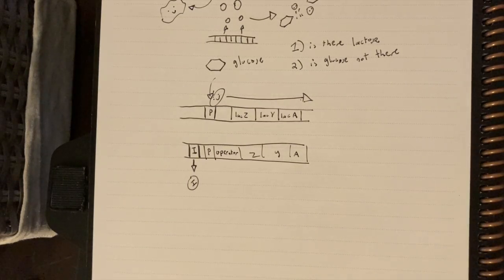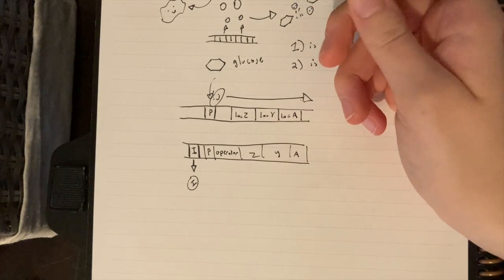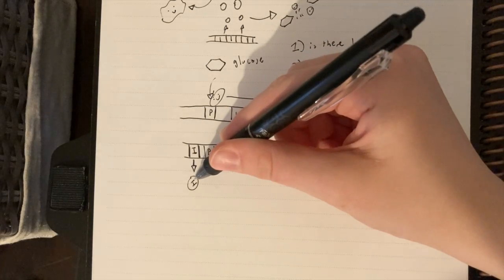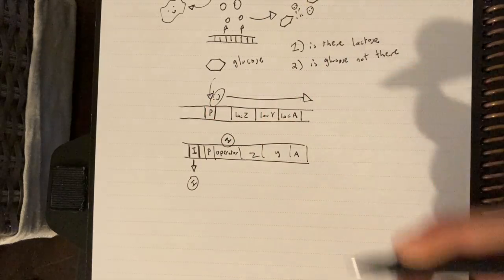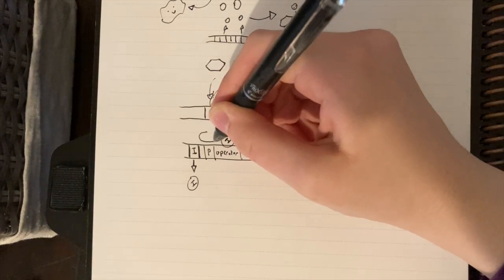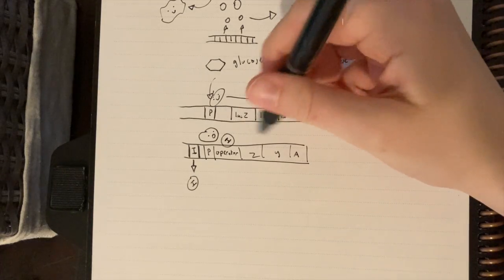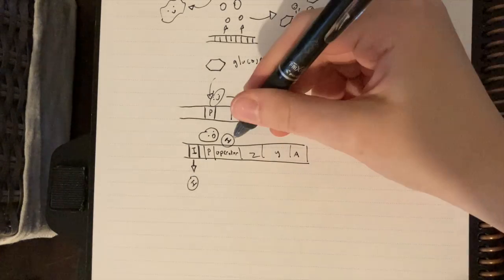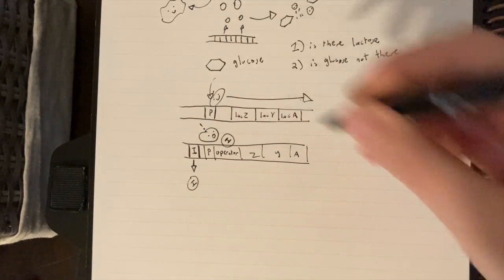What does a repressor even do? It's kind of in the name — it represses. It stops genes from being expressed by physically stopping RNAP from doing its job. So when the repressor is produced, it comes and binds to the operator and stays there. An RNAP comes and binds to the promoter, but there is this repressor literally in the way, preventing it from reaching these genes. The repressor just stops the RNAP from doing anything.